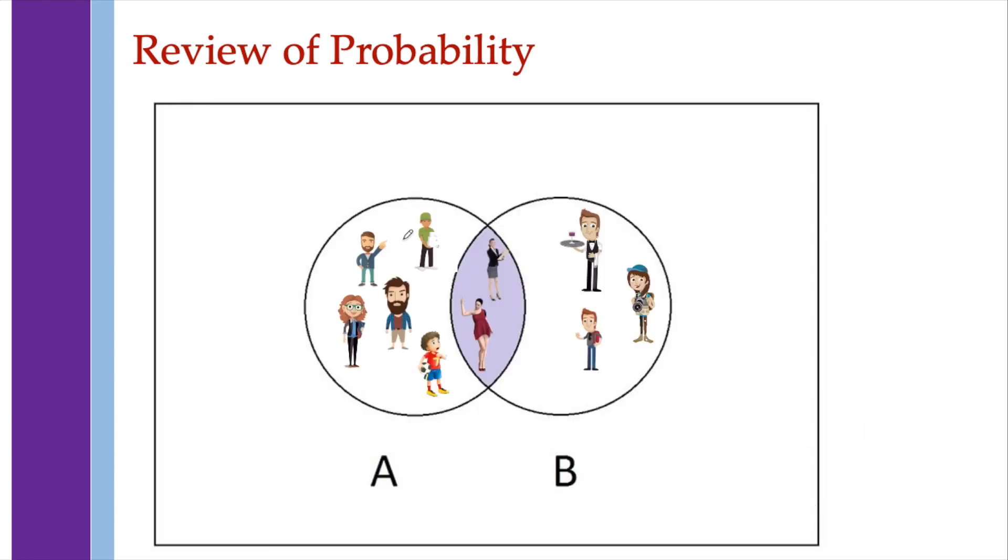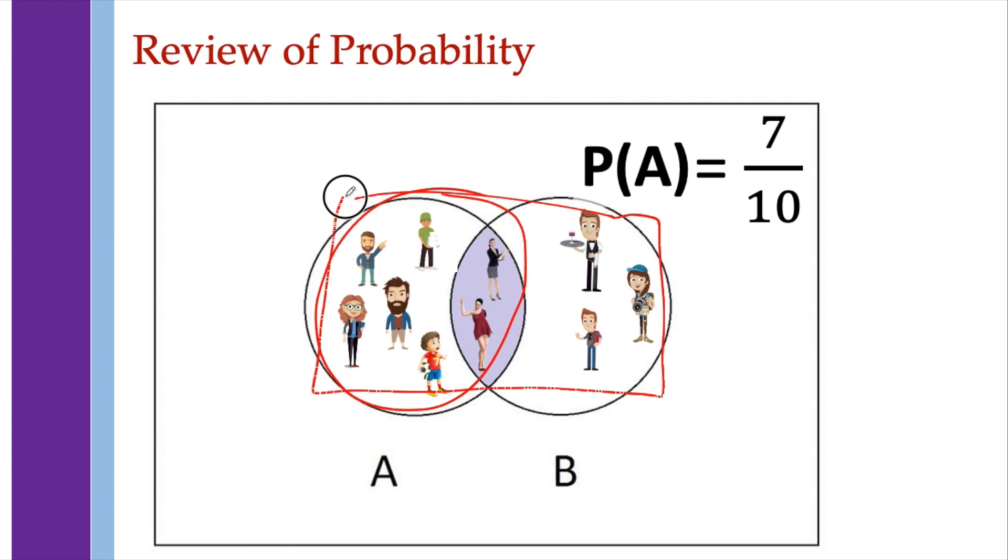Suppose we have this figure wherein you have 10 people who are either in A or B or both. A person is randomly selected. What's the probability that a person is from A? We have 7 out of 10, since there are 7 people in A out of the 10 possible people.